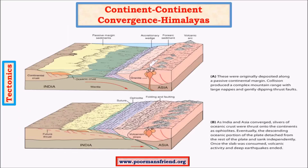Now let us move to the very important concept of the formation of the Himalayas. The formation of the Himalayas is a little different from the Ural mountains in that it involves one important concept called a geosyncline. A geosyncline is nothing but a broad depression which is a part of oceanic crust situated between two continental crusts.